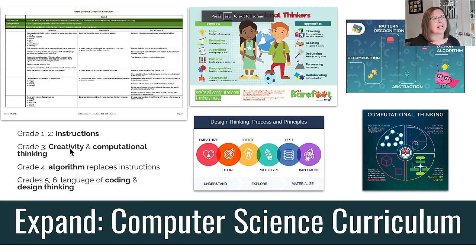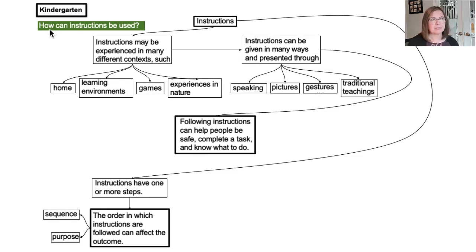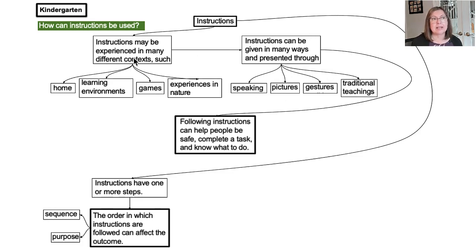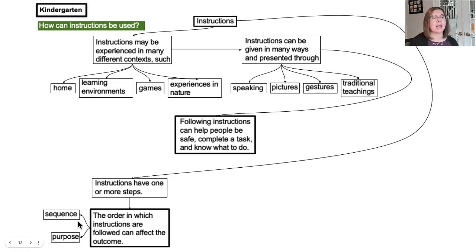In kindergarten, our guiding question is: how can instructions be used? There are basically two main points. One is the give and take of instructions — we can receive instructions in these ways and we can provide instructions in these ways. The second point is that instructions may have one step, but they may also have more than one step. What is your purpose? What do you have to do to get there? And how many steps will it be? If it's more than one step, then the sequence can affect the outcomes — for example, going forward and sideways versus sideways and forward to reach the coat rack will affect the outcome.